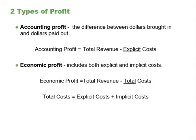These two definitions of cost are important for distinguishing between two conceptions of profit: accounting profit and economic profit. Accounting profit is a cash concept — it means total revenue minus explicit cost, which is the difference between dollars brought in and dollars paid out. Economic profit is total revenue minus total cost, including both explicit and implicit cost. Even though a business pays income taxes based on its accounting profit, whether or not it is economically successful depends on its economic profit.